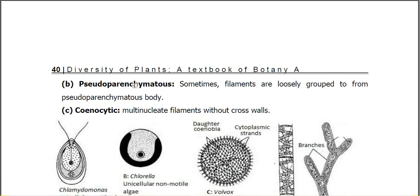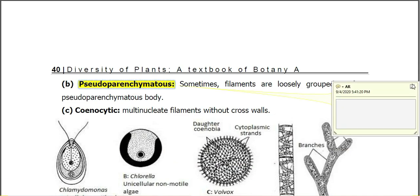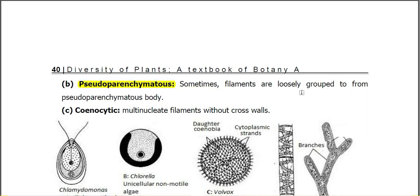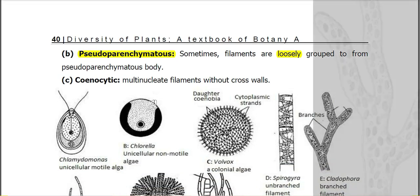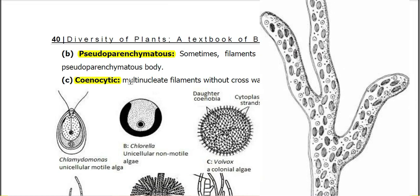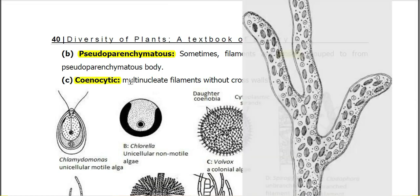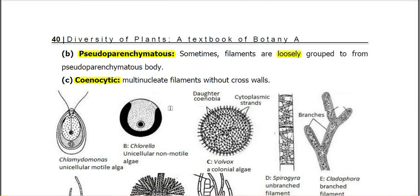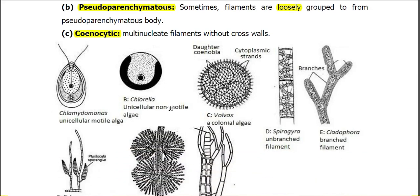The algal filaments may also be pseudoparenchymatous. Pseudoparenchyma is the condition in which filaments are loosely grouped to form a pseudoparenchymatous body. The filaments may also be siphonous — a multinucleate condition in which adjacent cells are without cell walls. These are the main thallus organizations of algae.